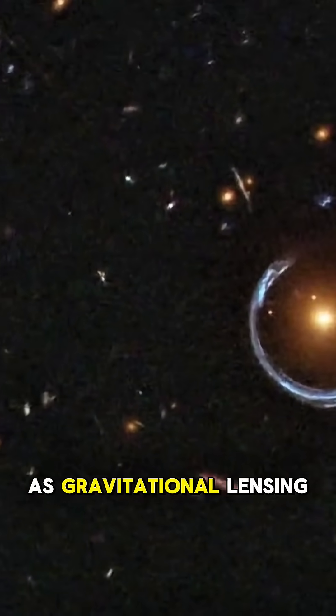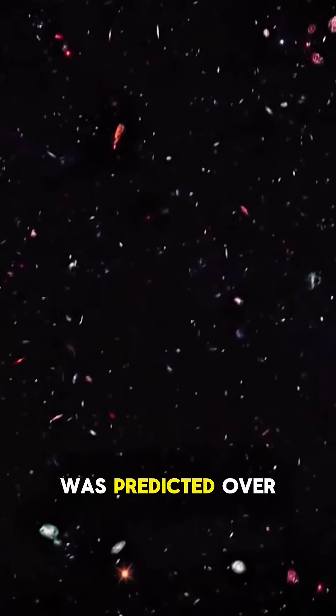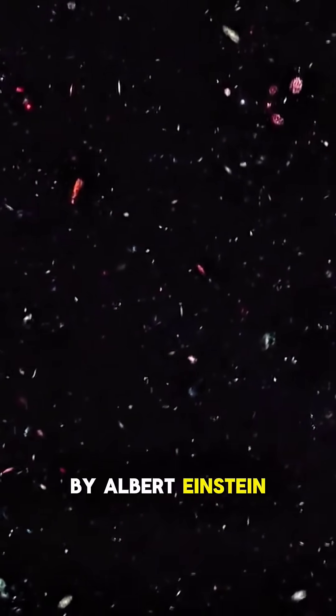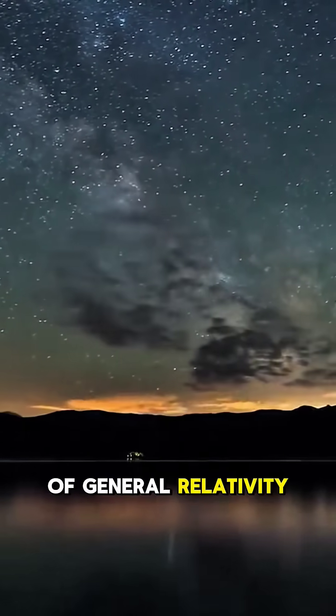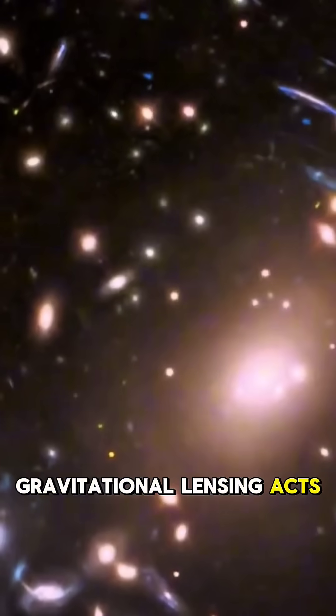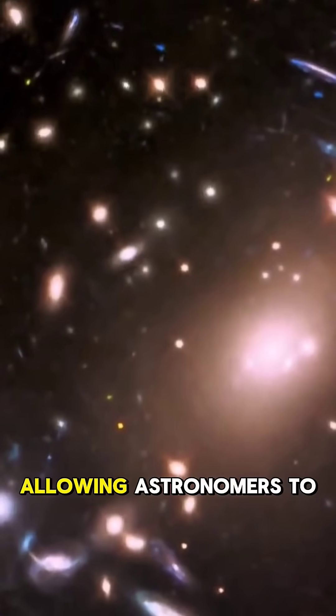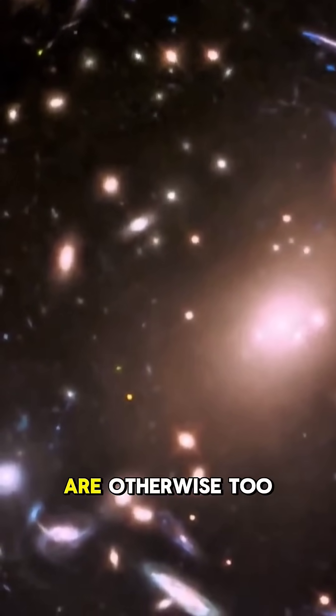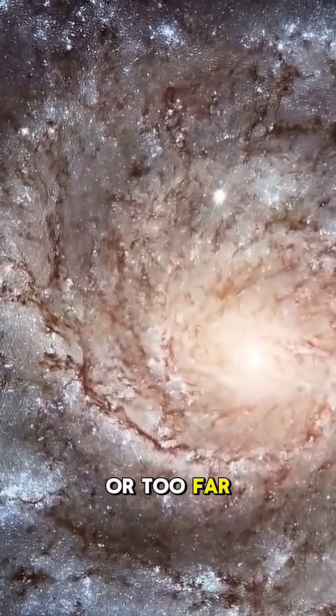This phenomenon, known as gravitational lensing, was predicted over a century ago by Albert Einstein in his theory of general relativity. Gravitational lensing acts like a natural telescope, allowing astronomers to observe galaxies that are otherwise too faint or too far away.